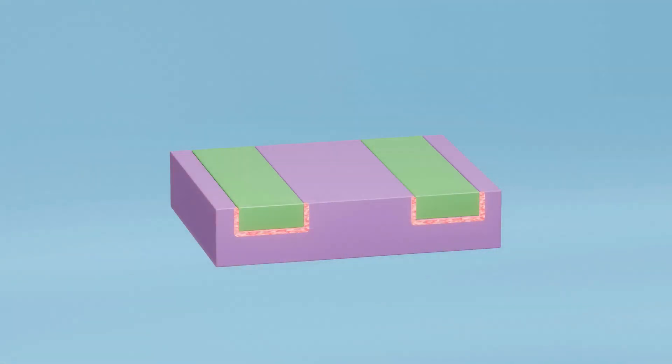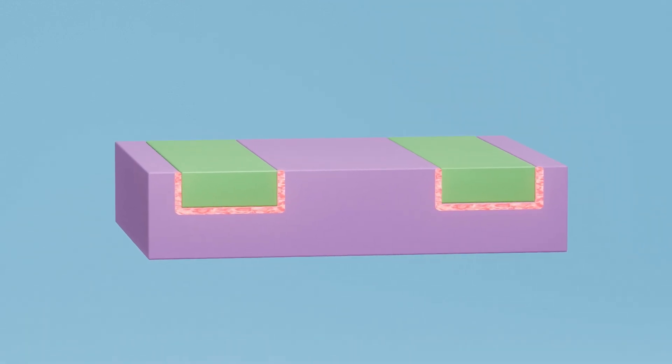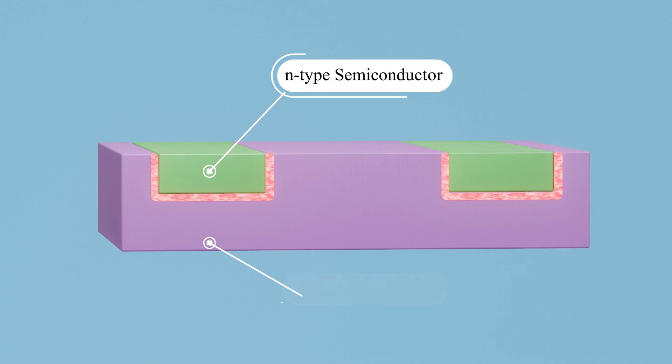This is the MOSFET transistor, a switch that can control the flow of electricity with incredible precision. The structure of a MOSFET consists of green regions representing N-type semiconductors and pink regions representing P-type semiconductors.